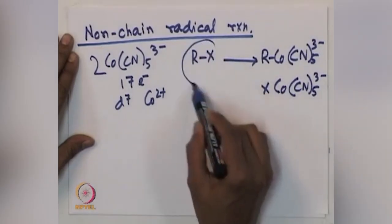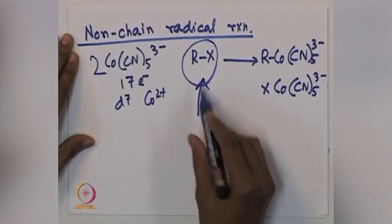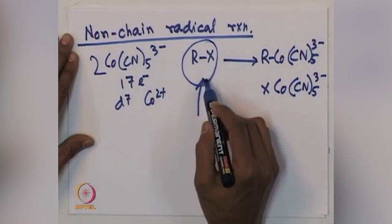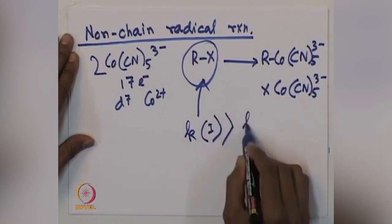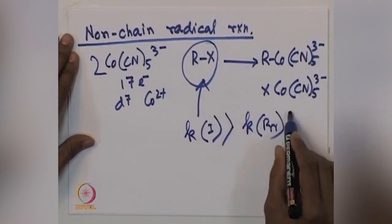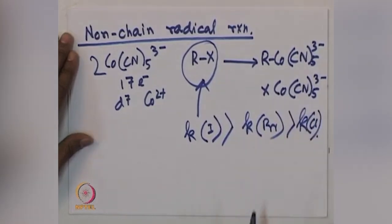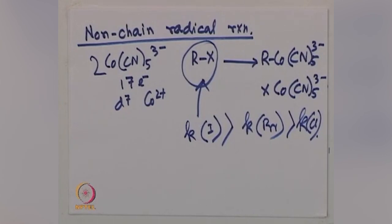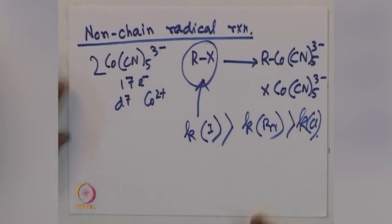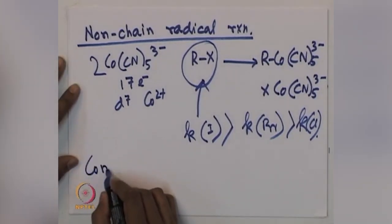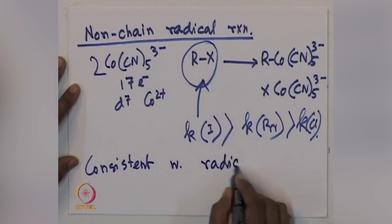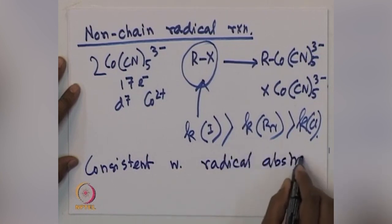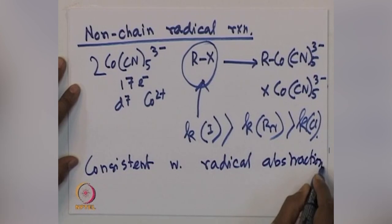Two of these cobalt species will react with Rx to give you R-Co(CN)₅³⁻ and X-Co(CN)₅³⁻. Now, if you vary different Rx — say iodide, bromide, chloride — the rate constant for iodide will be faster than bromide, then chloride and so on. This further proves that it is a radical mechanism, consistent with radical abstraction.